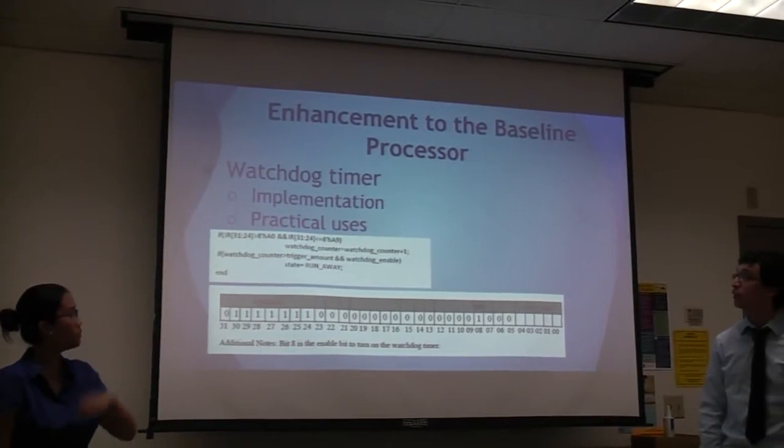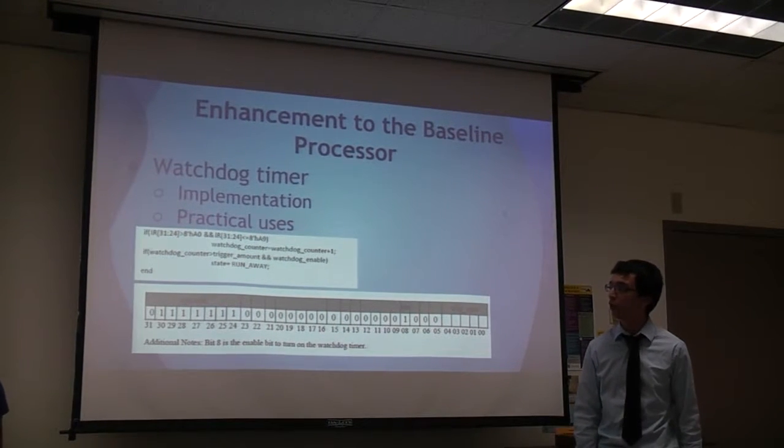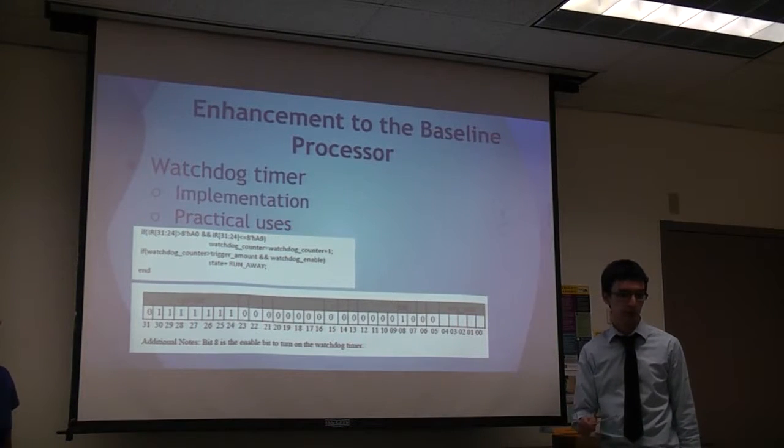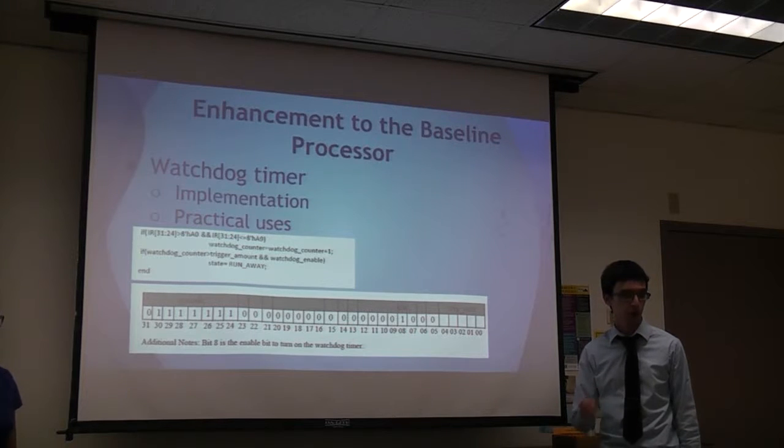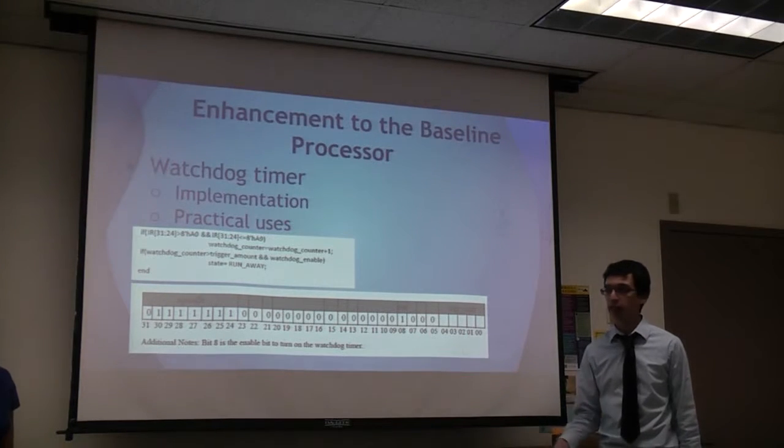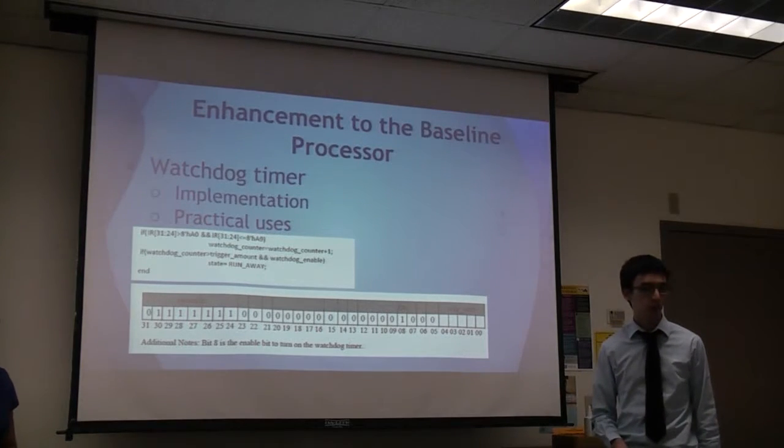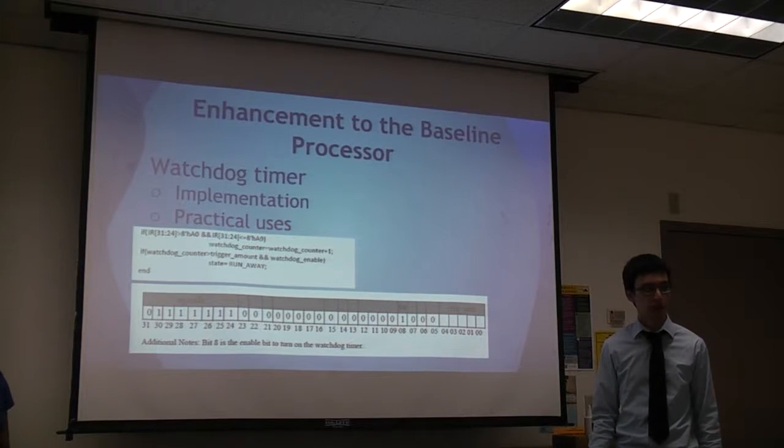Our hackings to the baseline processor. We added a watchdog code. The way we did it was we just added a counter that would count a conditional jump loop. And if it went through that jump loop a certain amount of time, we would recognize it as an error. And then we would go to a runaway state. For our design, a runaway state simply throws it into a halt. But it could be changed to do something else, such as a restart.